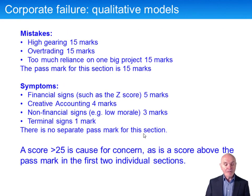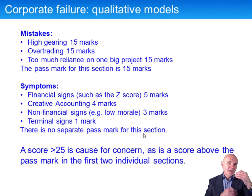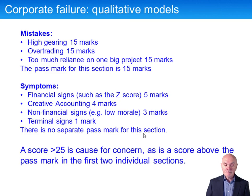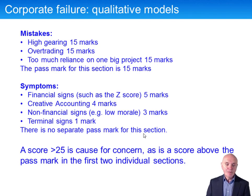Under mistakes: high gearing gets you into big trouble to start with, as does over-trading — trying to do too much with too little permanent capital, living from hand to mouth, nearly always bumping up against your overdraft limit, always worried about how you're going to pay the wages. Too much reliance on one big project that might go wrong is also a bad sign. Under symptoms: an interesting one is creative accounting — changing your depreciation policy or the way you recognise income — which is a sign of a desperate board. A score over 25, or individual scores above 10 or 15 in the first two sections, indicates concern.